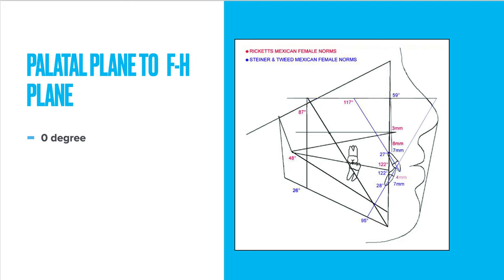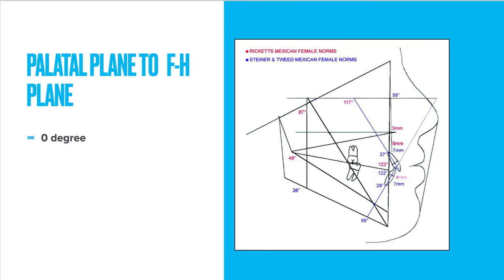The palatal plane to FH plane angle is zero degrees. Denture height, or lower facial height, is the angle made by ANS, Xi point, and PM. The normal value is 47 degrees. It shows a tendency toward open bite or deep bite.